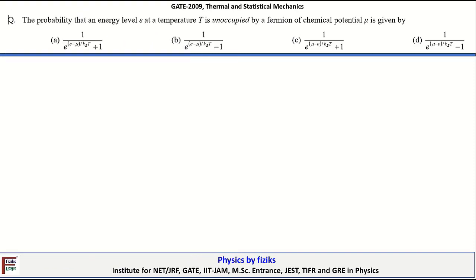In this video, we are going to talk about a question in thermal and statistical physics which appeared in the GATE 2009 examination. The first question is: the probability that an energy level E at a temperature T is unoccupied by a fermion of chemical potential mu is given by?